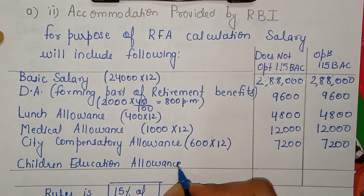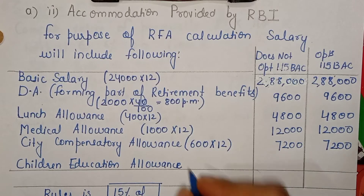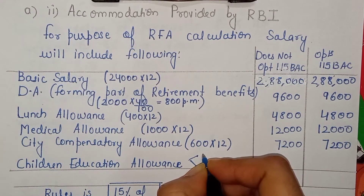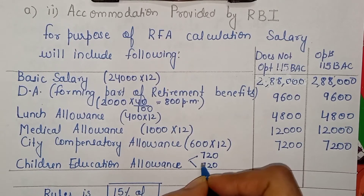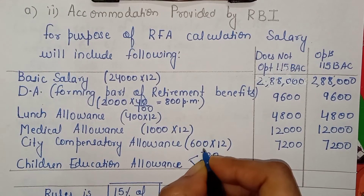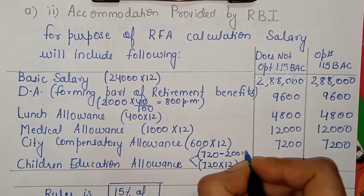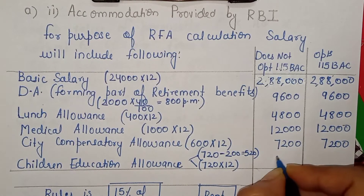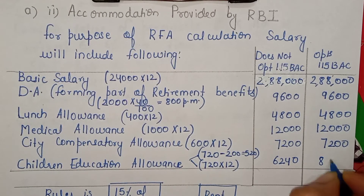Now comes the difference — children's education allowance. The allowance is 360 per month per child; for 2 children that is 720 per month × 12 = 8,640. However, there is an exemption of 100 per month per child, so 200 per month is exempt, leaving taxable amount 520 per month × 12 = 6,240. Without Section 115 BAC the taxable amount is 6,240; if opting for 115 BAC the full 8,640 is included since the exemption is not available.